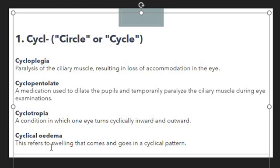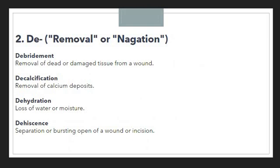Then we have cyclical edema, which refers to a swelling that comes and goes in a cyclical pattern. Whenever there is any swelling that comes in a cyclical pattern, we will use the prefix CYCL. So this is how we can use the CYCL prefix in order to show cyclical movement.